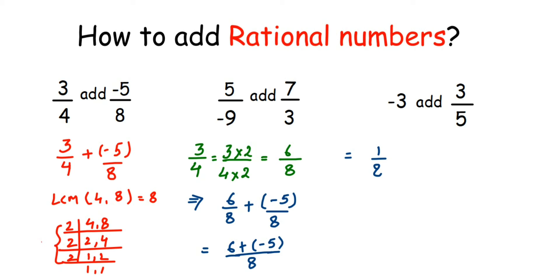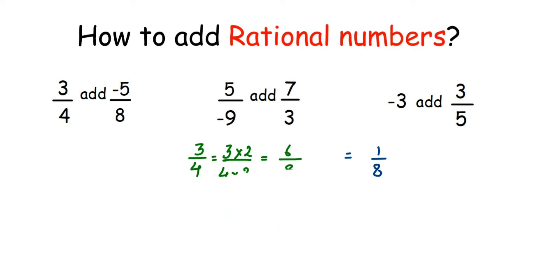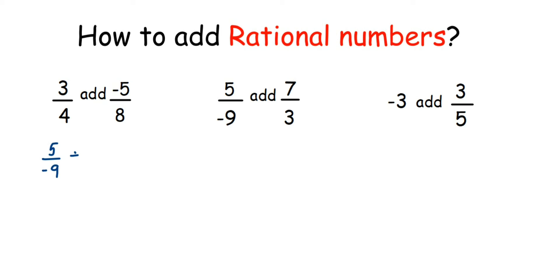I hope that is easy and it is clear how to add rational numbers. Now the same approach applies to the second and third questions. If you know how to do it you can pause the video and check the answer, or continue to watch me solve the second question. The second question is 5 by minus 9 plus 7 by 3.